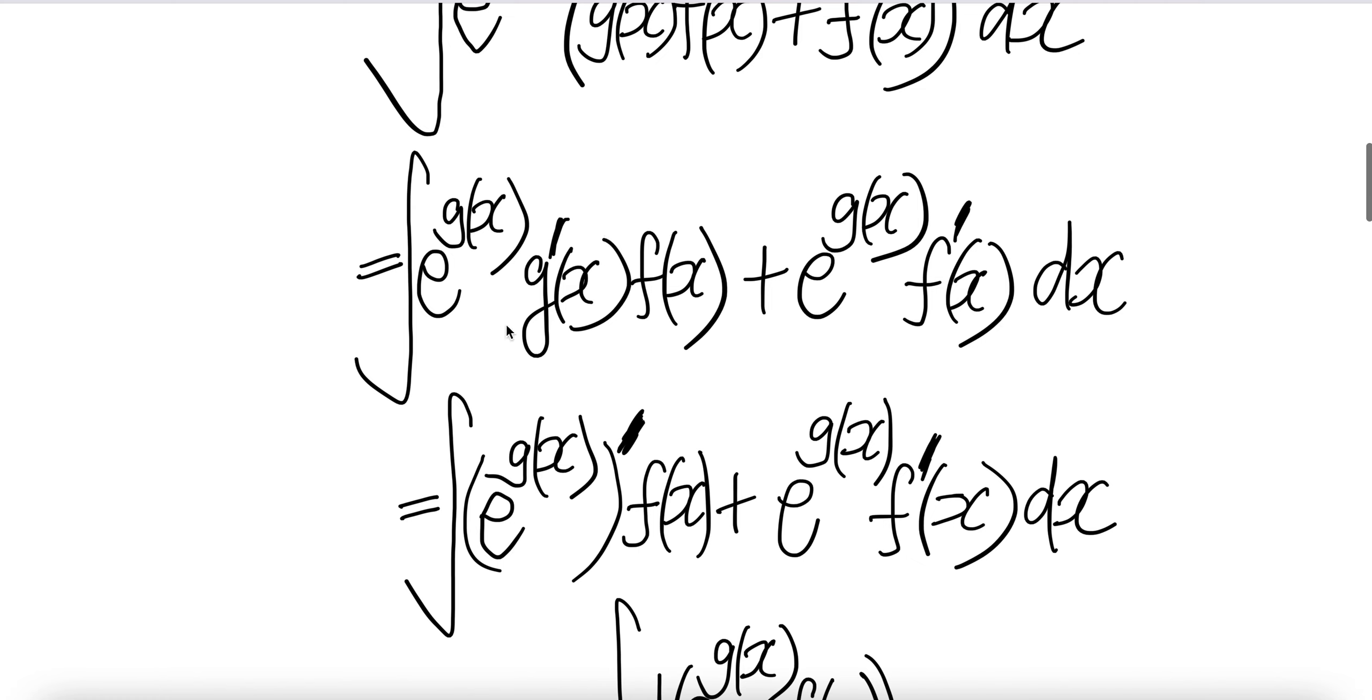Now let us write this as the derivative of e to the power of g(x). The derivative of e^g(x) is e^g(x) times the derivative of g(x), which is g'(x). So this is the same thing as that. Everything here is the same.